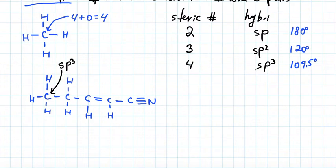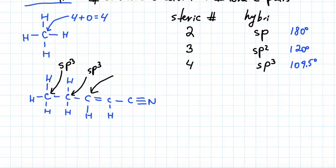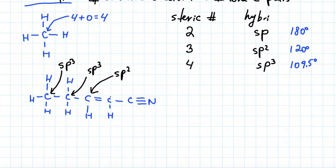The next carbon is attached to two hydrogens and two carbons — four attachments, no lone pairs — so its hybridization is sp3. The next carbon has three attachments: two carbons and one hydrogen, and no lone pairs, so its steric number is three and hybridization is sp2. Notice — I did not look at the number of bonds, I look at the number of attached atoms. It does not matter whether the attachment is a single, double, or triple bond. I only look at the number of attachments, not number of bonds.